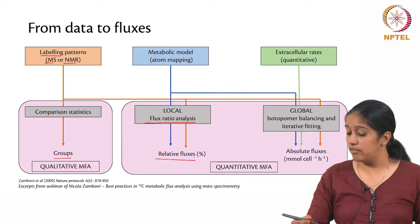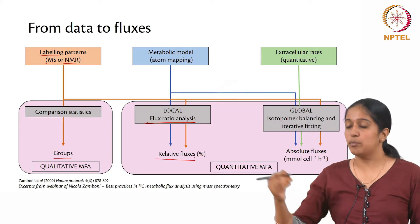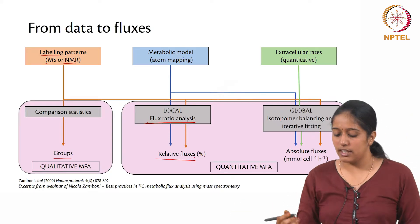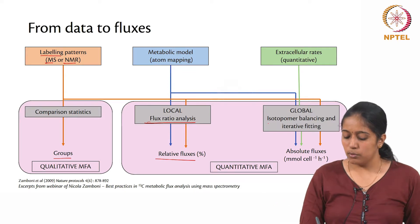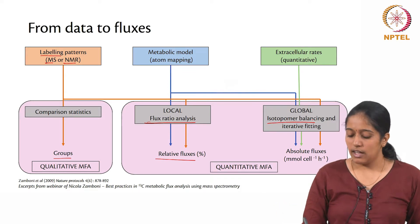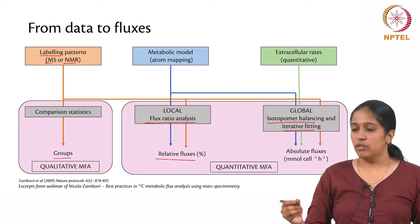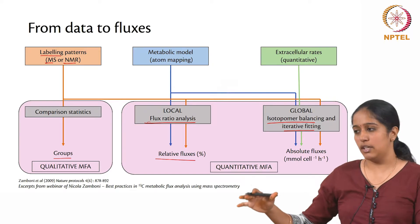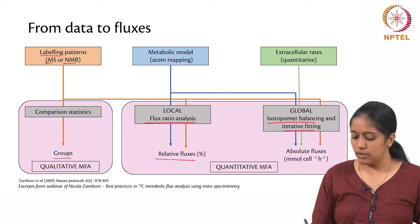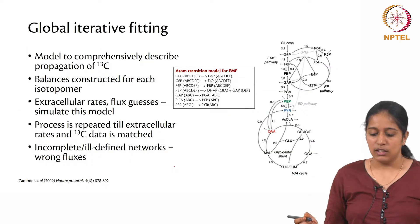When you also quantify the extracellular rates — such as the substrate uptake rate and the product formation rate — you can do a global analysis where you perform isotopomer balancing. You have a model and do iterative fitting to find out the flux map for a given particular pathway, and these give you the absolute fluxes. So qualitative analysis gives relative fluxes, while the global approach gives absolute fluxes.